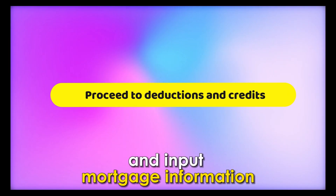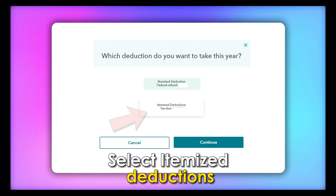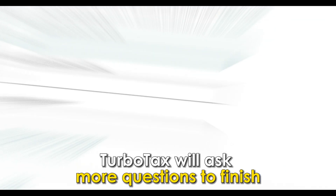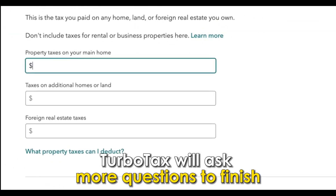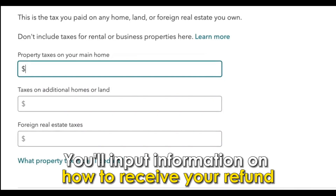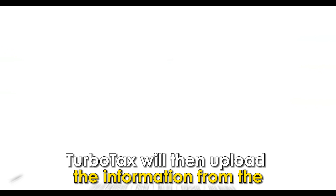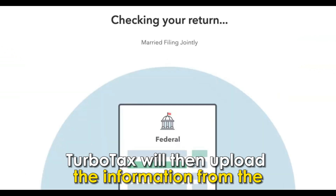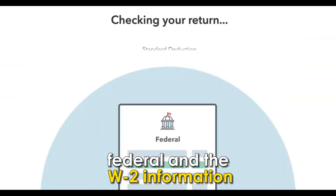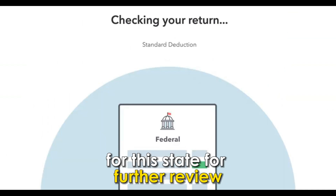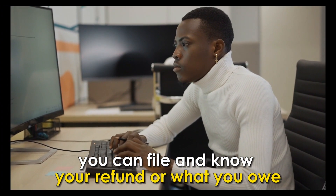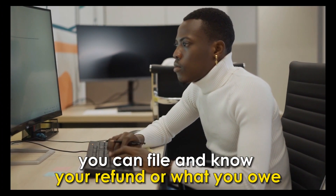Proceed to Deductions and Credits and input Mortgage Information. Select Itemize Deductions. TurboTax will ask more questions to finish your returns. You'll input information on how to receive your refund. TurboTax will then upload the information from the federal and the W-2 information for the state for further review. If there are no errors with your provided information, you can file and know your refund or what you owe.